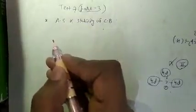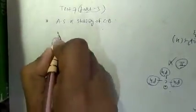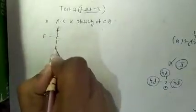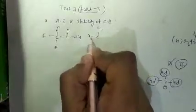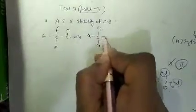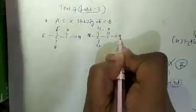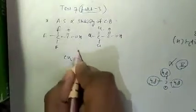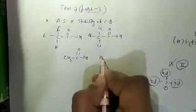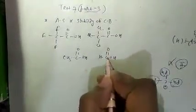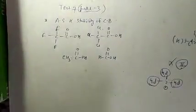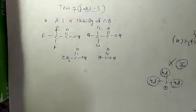In the case of trifluoroacetic acid, three fluorine atoms are attached to the carbon. In trichloroacetic acid, three chlorine atoms are attached to the carboxylic group. The four acids given are formic acid, acetic acid, trifluoroacetic acid, and trichloroacetic acid.